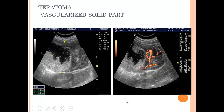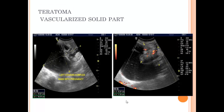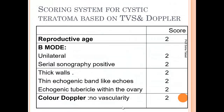We will discuss what type of malignant transformation can occur in mature cystic teratoma. In another case, there is a vascular component — this was a pregnant female with an adnexal mass, suspicious for malignant transformation. Using an older scoring system: being unilateral scores 2, serial sonography positive (same features on return visit), thick wall with thin echogenic bands like echogenic tubercles within the ovary, and no vascularity on color Doppler.